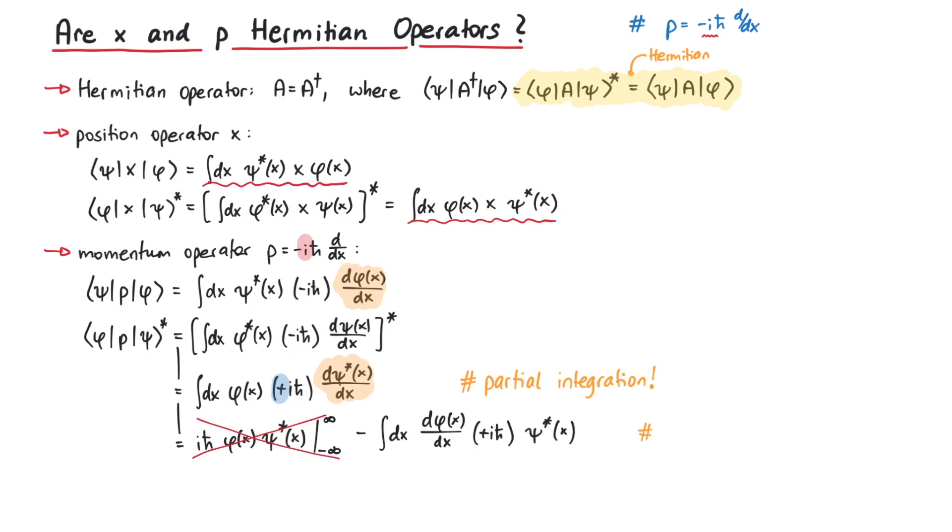The usual boundary condition for wave functions is that they vanish at infinity, so only the second term remains. Since we pick up another minus sign from the partial integration, we can cancel the two minus signs that we have collected and get the same expression as before.